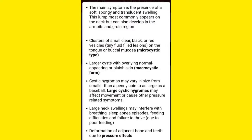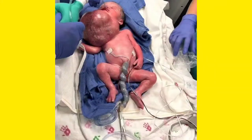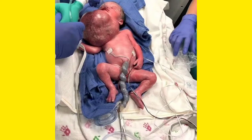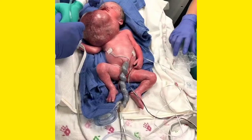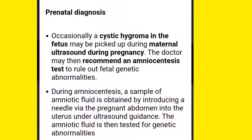This picture clearly shows cystic hygroma of the macro cystic type — you can see how huge the lump is. Because of this large cystic lesion, the patient experiences different kinds of problems including sleep apnea, difficulty in swallowing, and breathing problems.